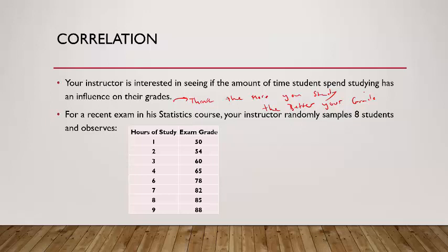For a recent exam in a statistics course, the instructor randomly samples eight students and observes the following data — we'll use this dataset throughout this lecture and the next two or three. The data includes hours of study and exam scores: hours of study are 1, 2, 3, 4, then skipping 5, then 6, 7, 8, and 9, with corresponding exam scores.